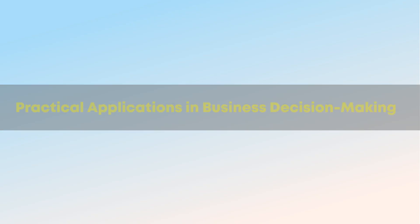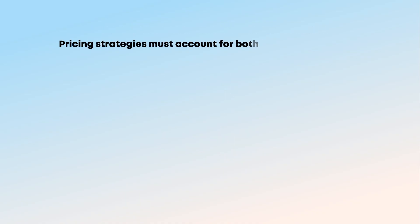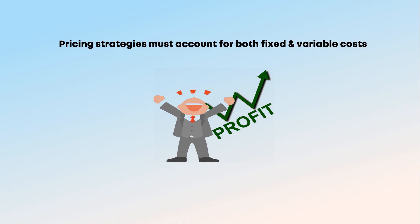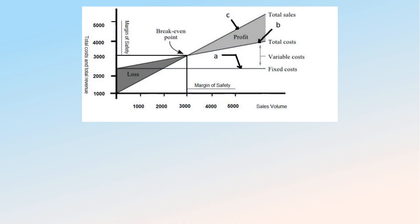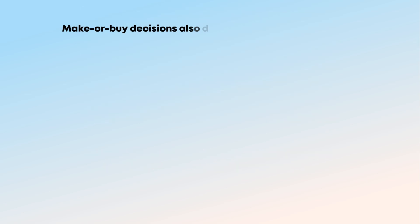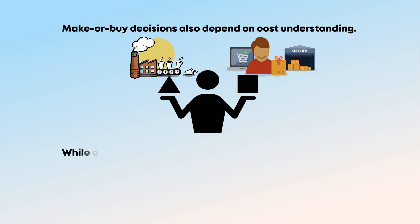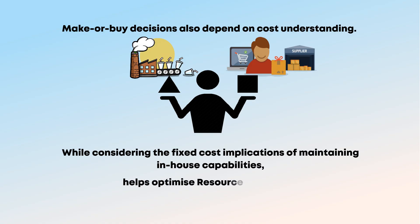Practical applications in business decision making: Understanding cost behavior helps businesses make better decisions across multiple areas. Pricing strategies must account for both fixed and variable costs while ensuring adequate profit margins. Break-even analysis relies on distinguishing between these cost types to determine minimum sales requirements. Make-or-buy decisions also depend on cost understanding. Comparing the variable costs of internal production against external supplier prices, while considering the fixed cost implications of maintaining in-house capabilities, helps optimize resource allocation.